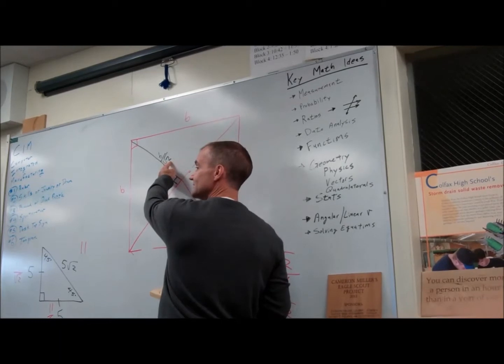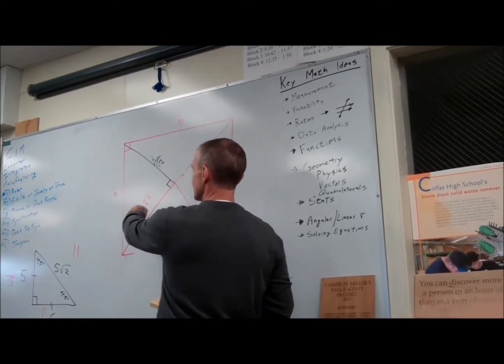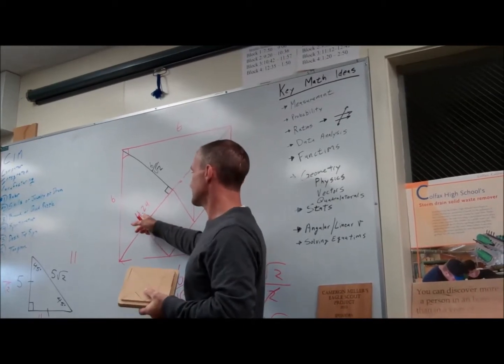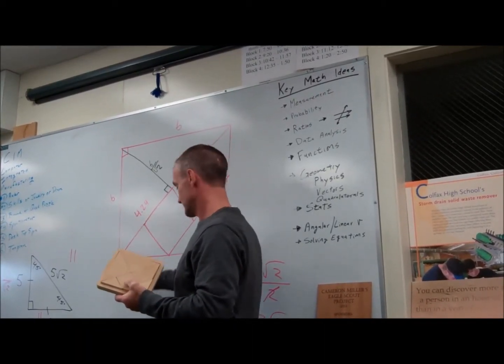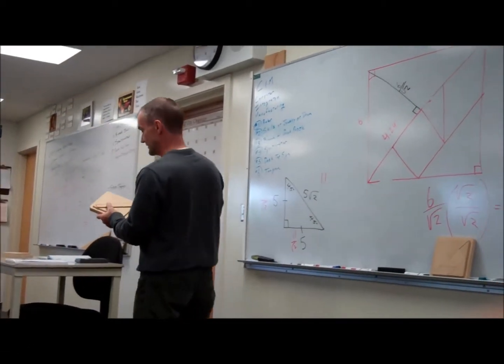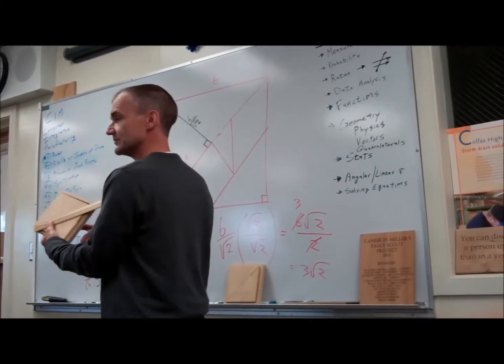We're not using approximate values. Do everything in exact values, and then you can check it with a calculator or approximate value and a ruler. So on your ruler, what should this be about? Four and a quarter. Yeah, so when I check the length of this right here, it should be about four and a quarter inches.